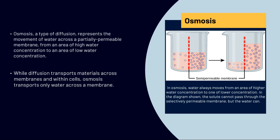And let's look to our right at the diagram. Like we said, in osmosis, water always moves from an area of higher water concentration to one of lower concentrations. In the diagram shown, the solute cannot pass through the selectively permeable membrane, but the water can.